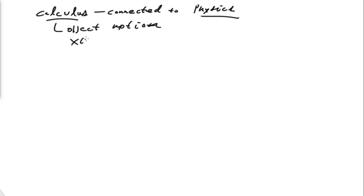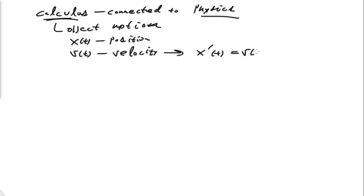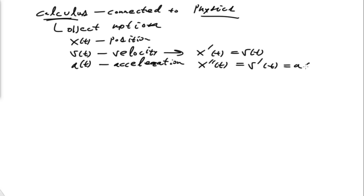For instance, x of t could be a position. Then velocity v of t would be the velocity, and we know the important relationship: x prime of t is equal to v of t. We also have the acceleration a of t, and that is x double prime of t, which equals v prime of t, which equals a of t. Calculus plays a role in describing the relationship between position, velocity, and acceleration — all important things for understanding object motion in the physics we learn alongside calculus.